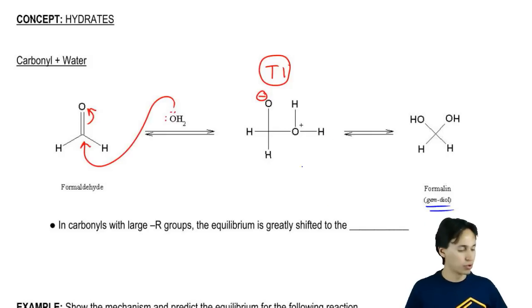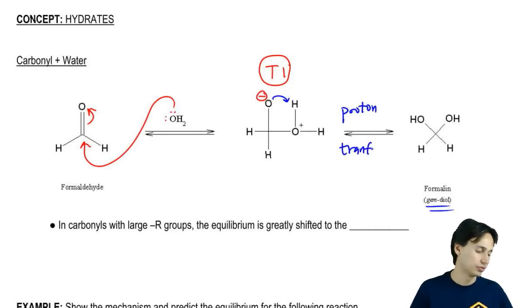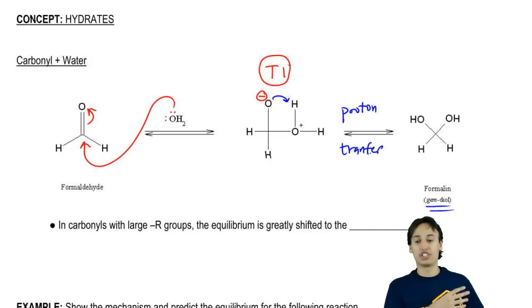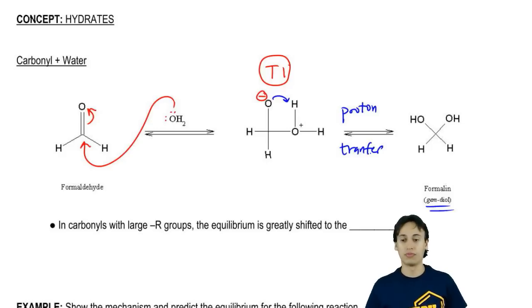Then what you get is a proton transfer. This step is called a proton transfer where the O literally just plucks an H off of another part of the tetrahedral intermediate. If this looks unfamiliar to you, you haven't done a lot of proton transfers yet, get used to it. A lot of these solvents that attack carbonyls, some of them are going to have proton transfers. It's something that you should be aware of.